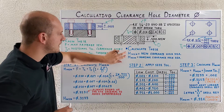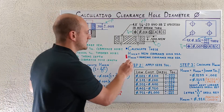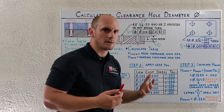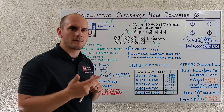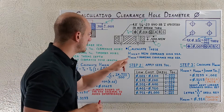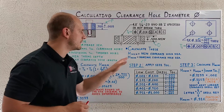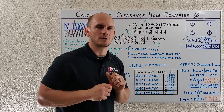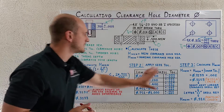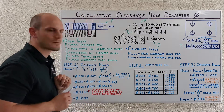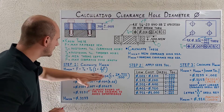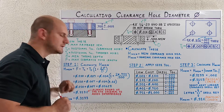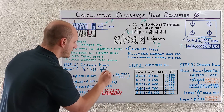Now we can calculate our two output values: the minimum clearance hole diameter — the absolute smallest these holes can be while still ensuring interference-free assembly — and the nominal clearance hole diameter, which is what we state in our clearance hole call-out as the target for the machinist. This is a three-step process, and the first step is to calculate the minimum clearance hole diameter using this formula: F plus T1 plus T2, all multiplied by the quantity in parentheses.